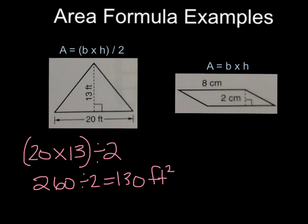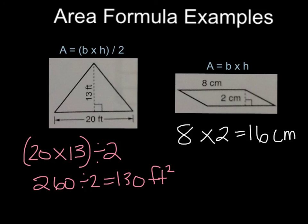Now let's practice finding the area of this parallelogram. The formula is A equals B times H. In this case, our base is found at the top of the figure — it is 8 centimeters. We multiply that by the height of 2, giving us an area of 16 centimeters squared, because we multiplied base times height.